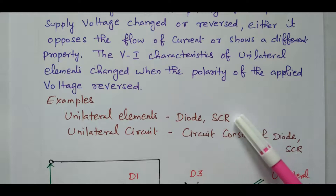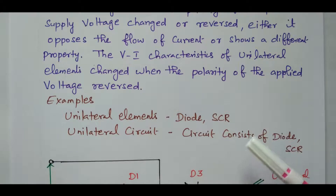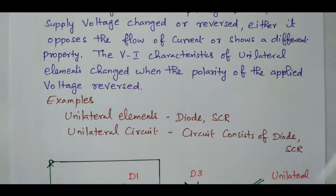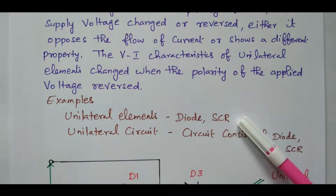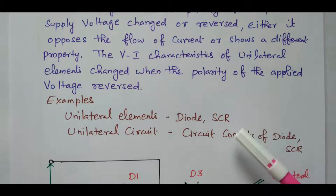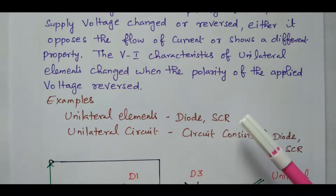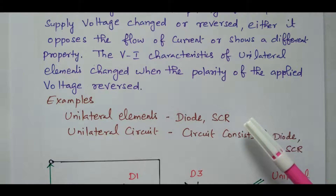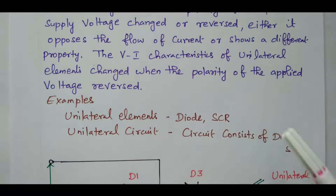SCR behaves similarly, with the addition of a gate terminal. When the anode is positive with respect to cathode and a gate signal is given, it will conduct. If the anode is negative with respect to cathode — reverse bias — even if you give the gate signal, it will not conduct. So during positive voltage application it conducts, but with negative voltage to the anode it will not conduct. That is why it is called a unilateral element.